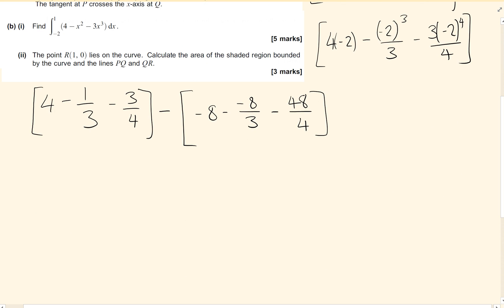Now, a lot of students found this really difficult. I'm going to look here, I've got a 3 and a 4, so I'm going to make this side twelfths. So I've got 4 minus 4 twelfths minus 9 twelfths.